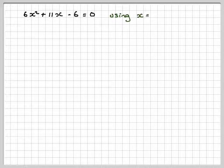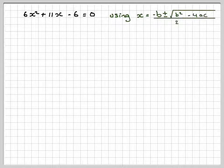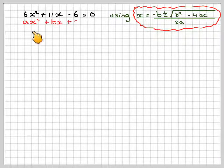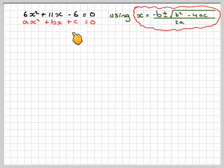It doesn't factorize, so we'll have to use the quadratic formula. So it's worth learning the quadratic formula. Minus b plus or minus the square root of b squared minus 4ac over 2a. Right under here, ax squared plus bx plus c.